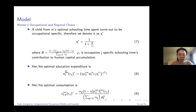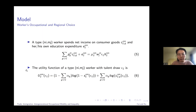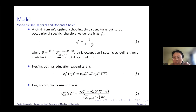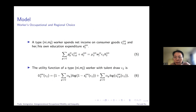We can calculate the optimal education expenditure and optimal consumption, then substitute the optimal e, c, and s back into the utility function to calculate the indirect utility of all types of workers with their skill draws.